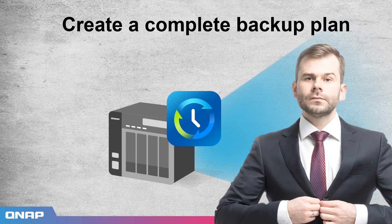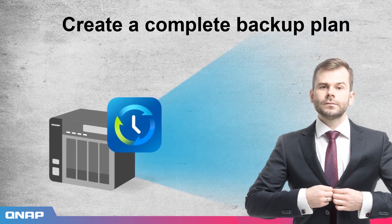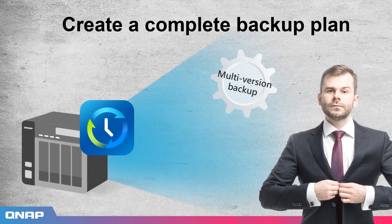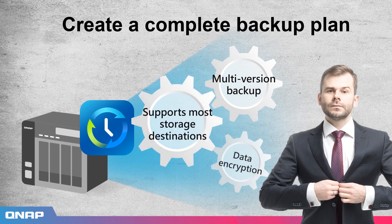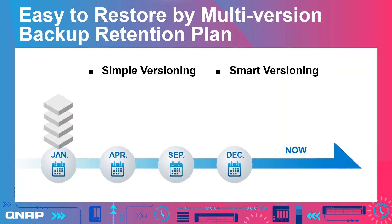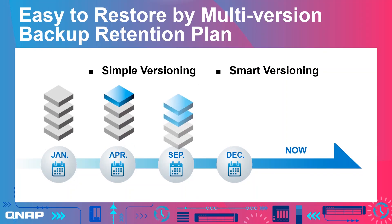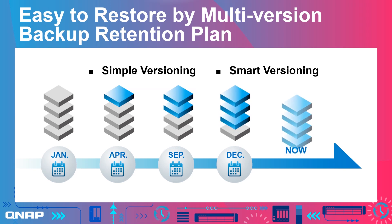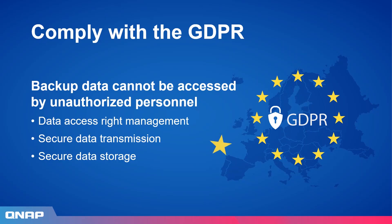Now let's make our own backup plan, which includes three main points: multi-version backup, data encryption, and supporting multiple storage destinations. First, using multi-version backup allows us to have more options for the data we want to recover. If you are worried that you don't have enough storage capacity, you can also choose smart versioning instead of simple versioning backup.